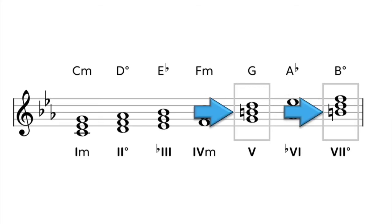You'll notice that in both the G major and the B diminished chords, there is a B natural. That's because there's a B natural in the harmonic minor scale. It's that raised seventh scale degree.